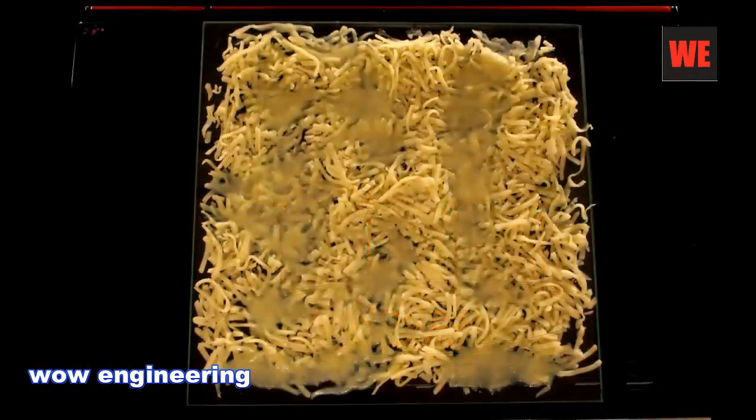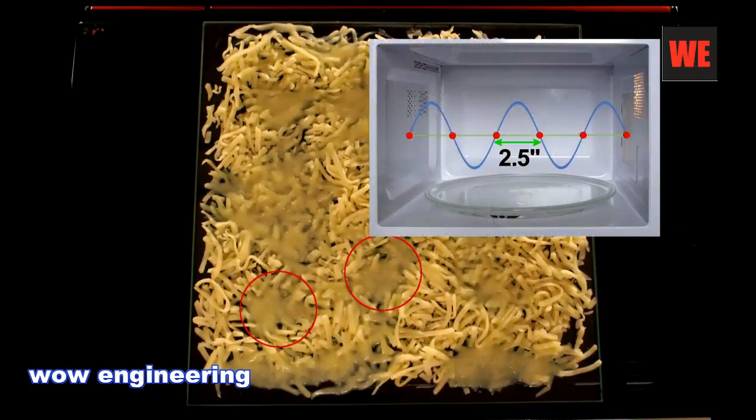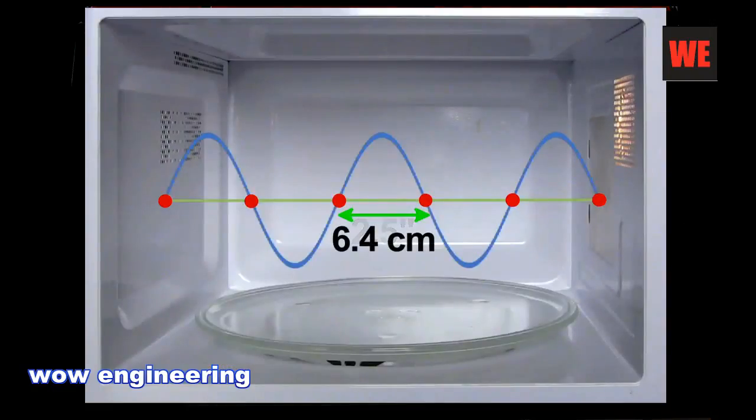If I measure the distance between melted cheese spots, I find about two and a half inches. That would be half the wavelength, the distance between nodes, and is pretty close to the actual wavelength of microwave radiation used.